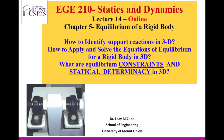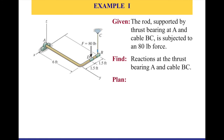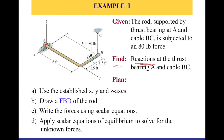This is the example I'm going to solve. Given the rod and rigid body structure shown, it is supported by a thrust bearing at point A and a cable BC, and it is subject to an 80-pound force going down in the z-direction. We would like to find the reactions at the thrust bearing A and cable BC — that is, the reactive forces and couple moments produced by these support reactions.